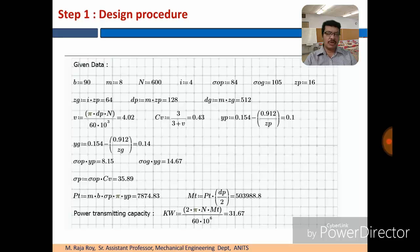Once module and number of teeth are known, you can find the pitch circle diameters, that is dp and dg. Then using the speed n and pitch circle diameter dp, you can find the velocity. It is less than 10 meters per second. Then Cv equal to 3 by 3 plus v. And for Yp, the equation is 0.154 minus 0.912 by Zp. Yp value we are getting as 0.1. Yg 0.14.